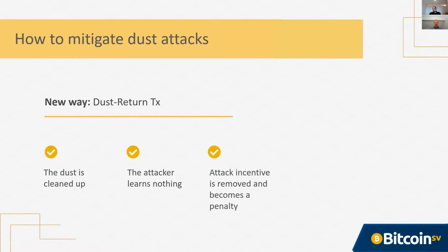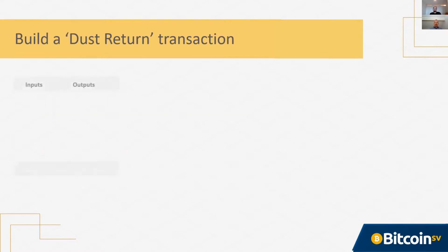This basically removes the incentive for the attacker to perform the dust attack in the first place — in fact it turns the incentive into a penalty, because they still incur the cost. If a dust attacker is sending out hundreds of thousands or millions of dust outputs and gains nothing from it, they have no reason to do it. The final and probably most important benefit is that the satoshis locked up in this dust are actually allowed to return to circulation.